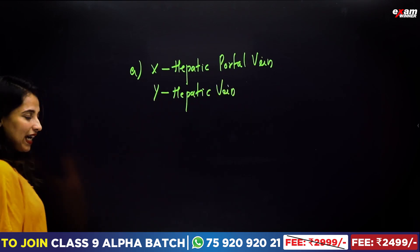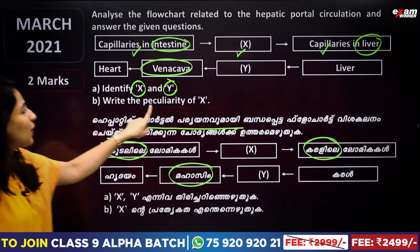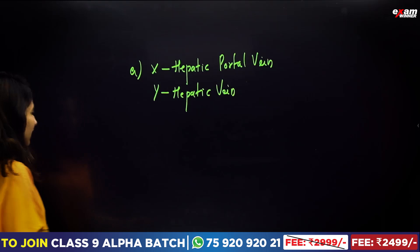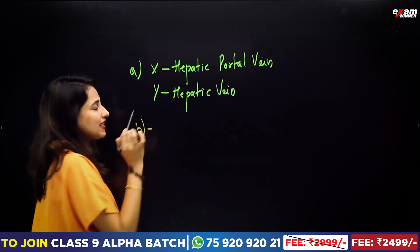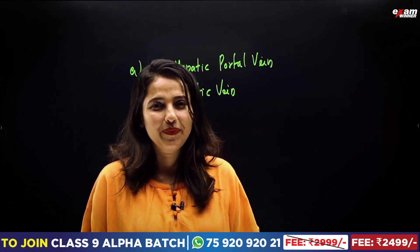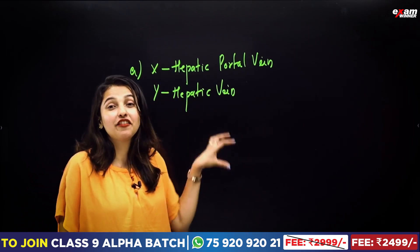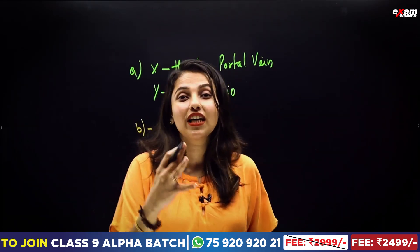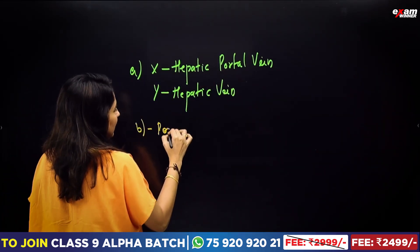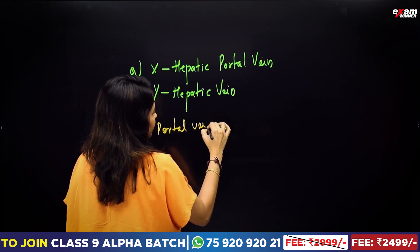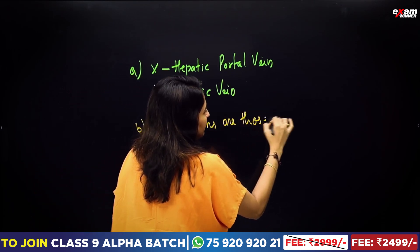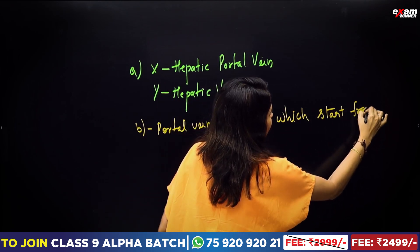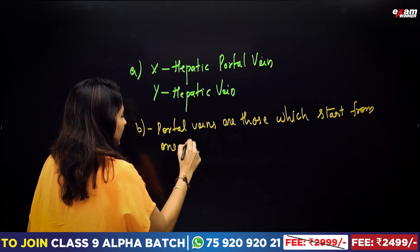Okay. Here is another question: write the peculiarity of X. If we call X, we call it the hepatic portal vein. What is the hepatic portal vein? It starts from one organ as capillaries and ends in another organ as capillaries. It is not a heart. Portal veins are those which start from one organ as capillaries.